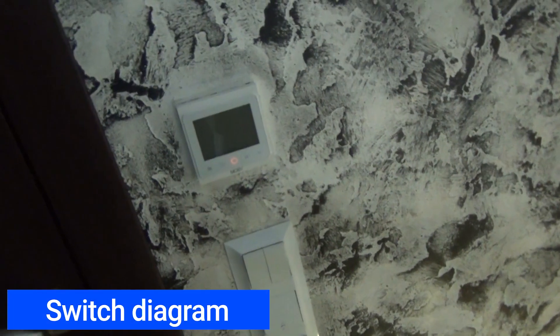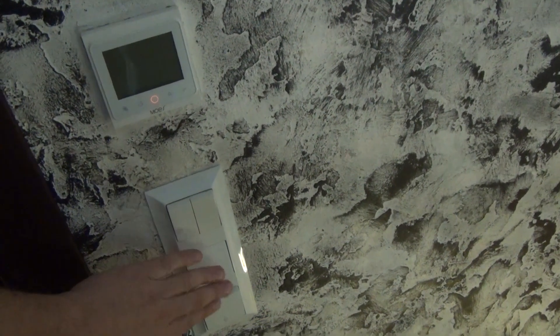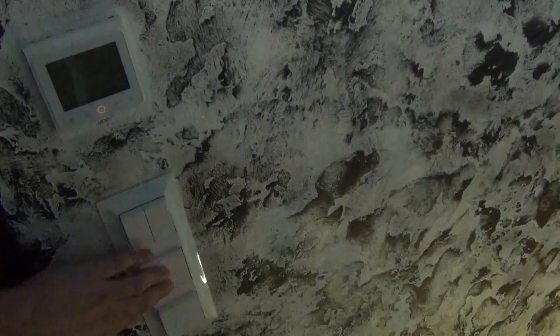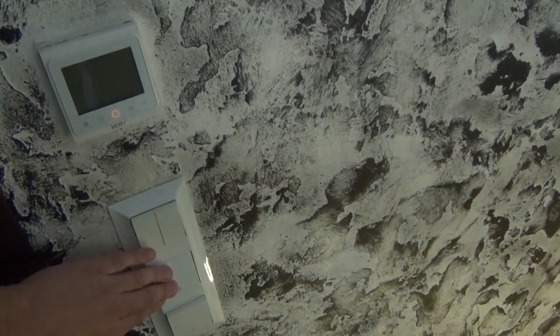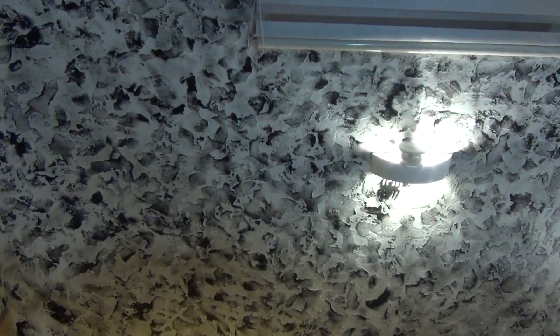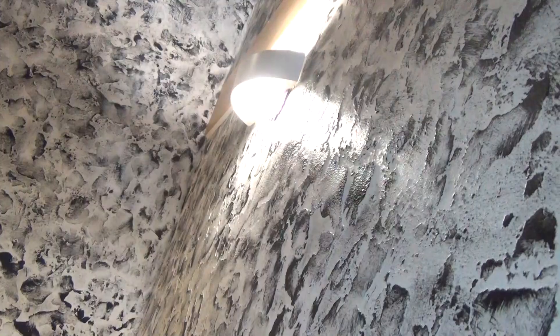Now let's figure out what pass-through switches are in general. Briefly, these are ordinary switches, only smarter in the scheme, because they allow you to turn on and off the same light from two different places. For example, you walk along a long corridor, at the beginning you turned on the light, and at the end you calmly turned the same light off. Convenient, right?